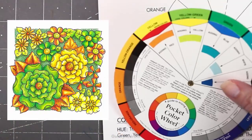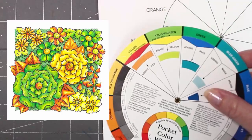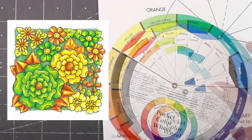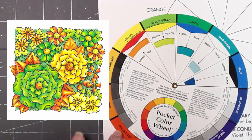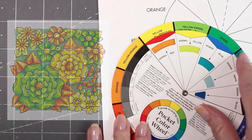Analogous is another fun color harmony to use because it can also be referred to as a rainbow color order. Analogous are colors that are right next to each other using at least two and up to five colors. For this example I have used orange, yellow orange, yellow, yellow green, and green.